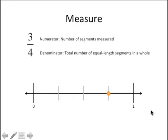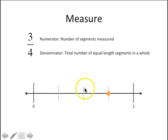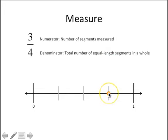When we teach students the measurement sub-concept, we often use length or number line visual representations. We teach students that the denominator — still four — tells us the number of equal-length segments in a whole. So if our whole is the distance between zero and one, we've got four equal-length segments. And three, the numerator, tells us the number of segments measured or counted: three out of four equal-length segments. This point represents three-fourths, or the distance three-fourths between zero and one on the number line.